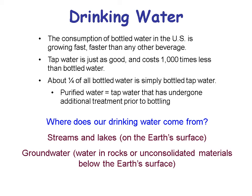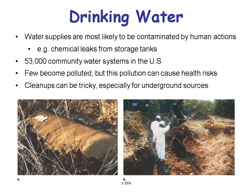About a fourth of all bottled water is simply bottled tap water. Purified water has gone through reverse osmosis or similar processes. Now there are parts of the country that have bad water, but that's not true in general. So where does our drinking water come from? It comes from lakes and streams on the Earth's surface, some from rivers, and also from groundwater — which is the topic of this lecture.